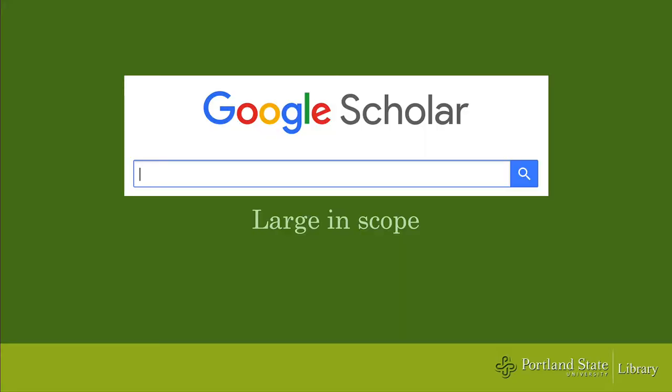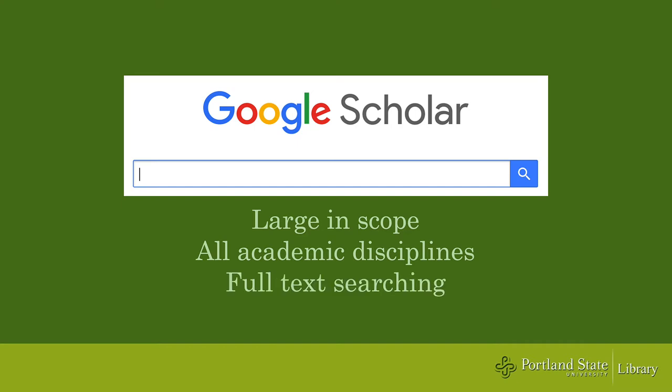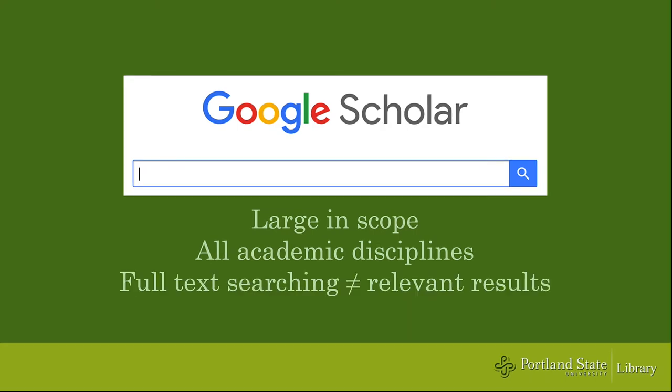That's because the scope of Google Scholar is very large — it includes all disciplines. Also, it's searching the full text of every item, so that means it includes results with your search terms mentioned, but that doesn't necessarily mean articles that match the subject of your search.